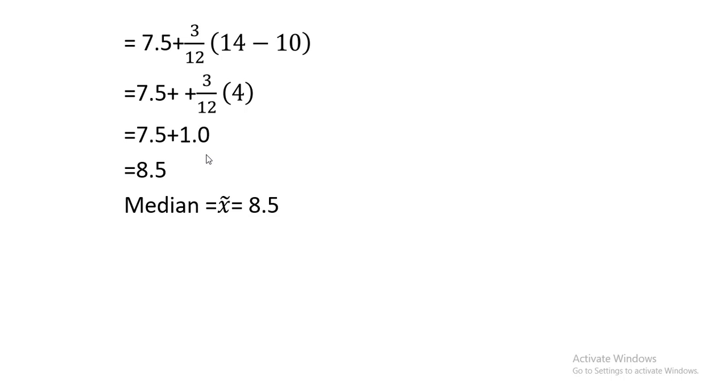Next step is that you are going to use the formula summation F by 2 to find out the median class. The value that appears after using this formula, you will be searching that value in the cumulative frequency. And look for the median class.